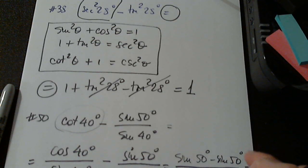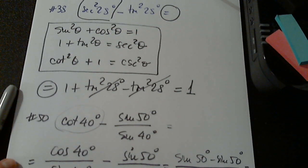How much is sine 50 minus sine 50? Sine 50 minus sine 50 is zero? How much is zero over sine 40? Zero. Thank you so much. Zero over sine 40 is zero. Okay, a very simple one for you.